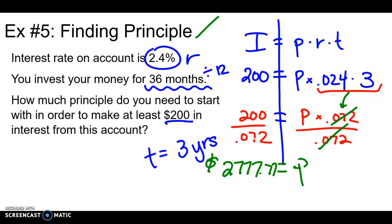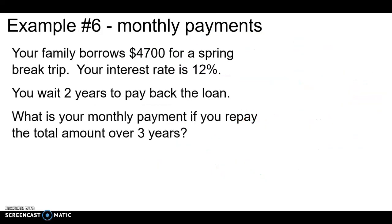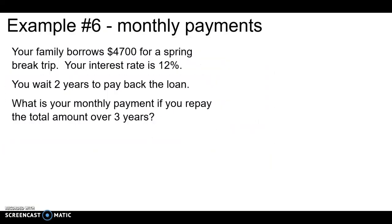All right. We have one more example. Example six. Monthly payments. There might be one like this on your test. So I wanted to make sure we did one together. Your family borrows $4,700 for a spring break trip. The interest rate, wherever they borrow that money from, is 12%. And you wait two years to pay it back. So the question is, what would your monthly payment be if you repay the total amount that you owe over three years? So I'm going to start with my formula. Let me make this a little smaller. Write that down every time so it sticks in your head. Looks like the principal is $4,700. That's the amount that we initially borrow. The rate is 12% on our credit card or wherever we put the money. And it sits there for two years before we pay it back. So two years.